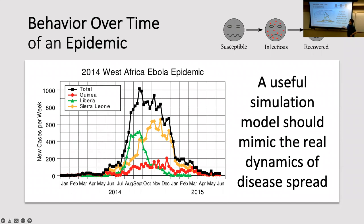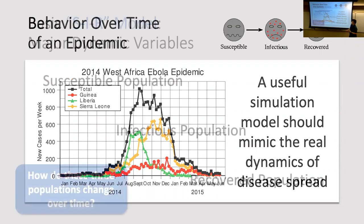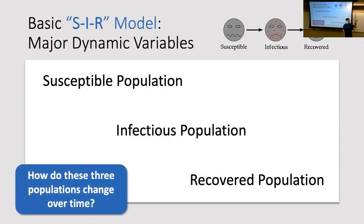We want to build a model that gives us these characteristics. Most sustainability students have probably seen the model we're going to start with today — the SIR model — but we're going to embellish it a little so we can start doing more sophisticated scenario planning. This will be a little bit of a review, but if you haven't seen it that's totally fine.